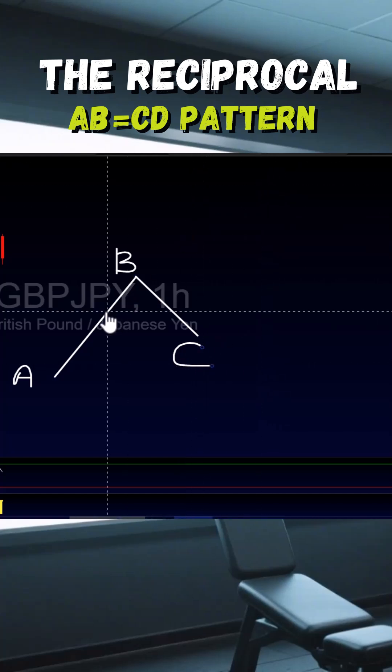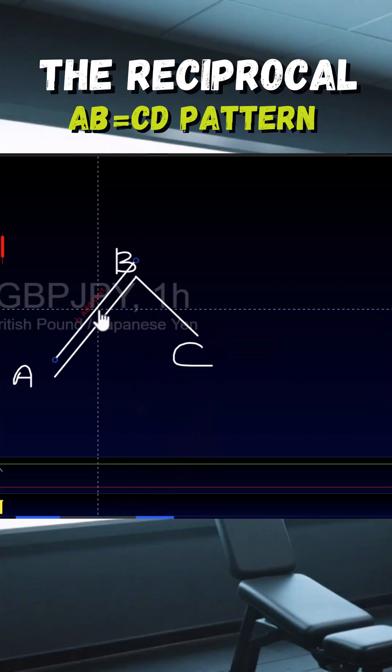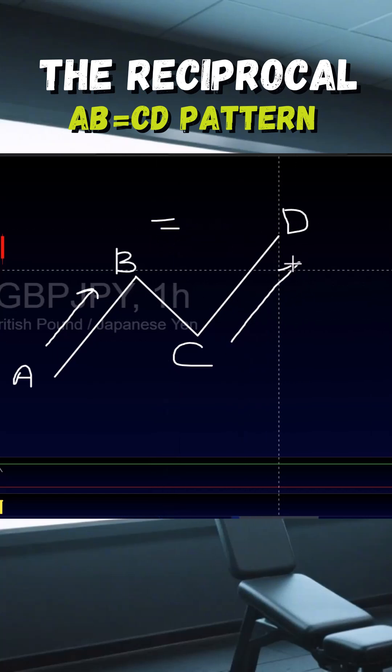Then we can copy and paste the length of this move, attach it to our C, and that becomes our D. So the length of AB is equal to the length of CD.